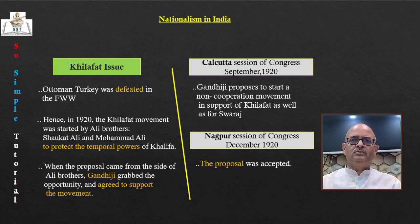We will read this topic under three heads: movement in the towns, rebellion in the countryside, and Swaraj in plantations. The movement started with middle class participation in cities — thousands of students left government-controlled schools and colleges and joined national institutions. It was at this time that Kashi Vidyapeeth, Jamia Millia Islamia and Gujarat Vidyapeeth came into existence. Headmasters, teachers and hundreds of lawyers including Chitranjan Das, Motilal Nehru, Rajendra Prasad and Sardar Patel gave up legal practice.